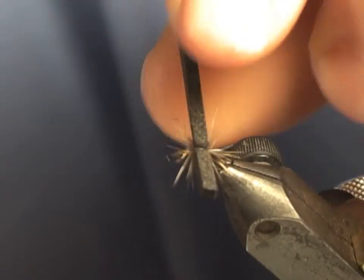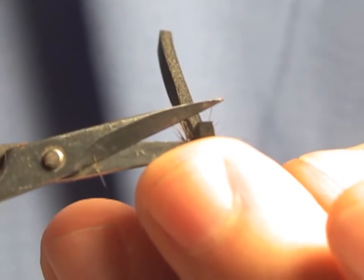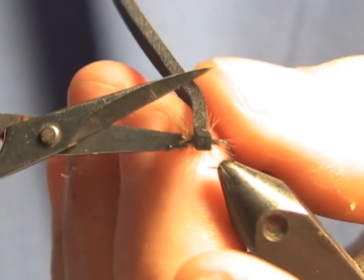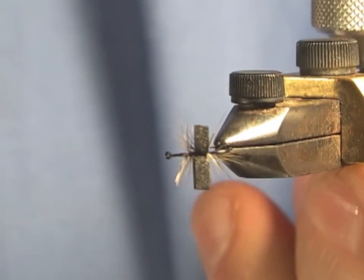And I'm going to trim the hackle off. And you want the body of the ant to be in total about the length of the hook. So that's about it. There you go.